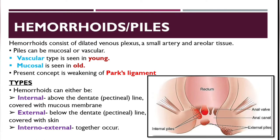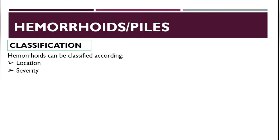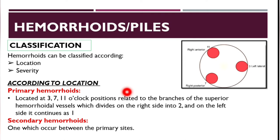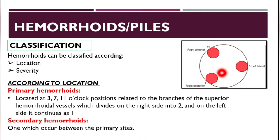Hemorrhoids can be classified according to location or according to severity. According to location, they can be primary or secondary. Primary hemorrhoids are located at three o'clock, seven o'clock, and eleven o'clock, related to branches of the superior hemorrhoidal vessels — which divide on the right into anterior and posterior branches, and on the left into one branch. Secondary hemorrhoids are those located between the primary sites.